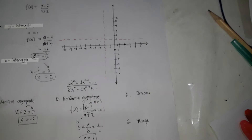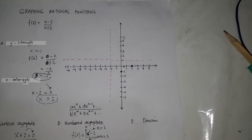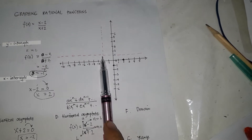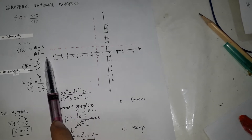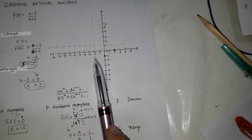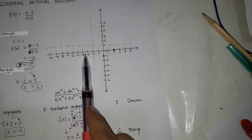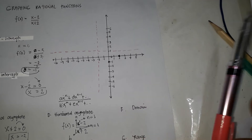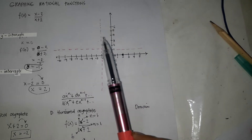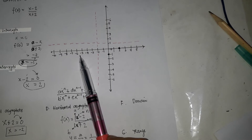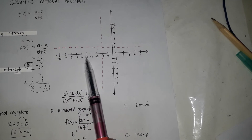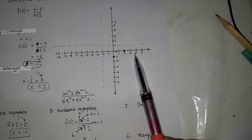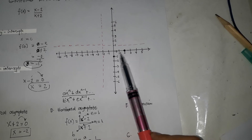Next, we're going to create the table of values. The vertical asymptote divides the graph into two parts: the left side and the right side. On the left side, I chose x values of negative 3, negative 4, and negative 10. On the right side, I chose negative 1, 0, and 3.